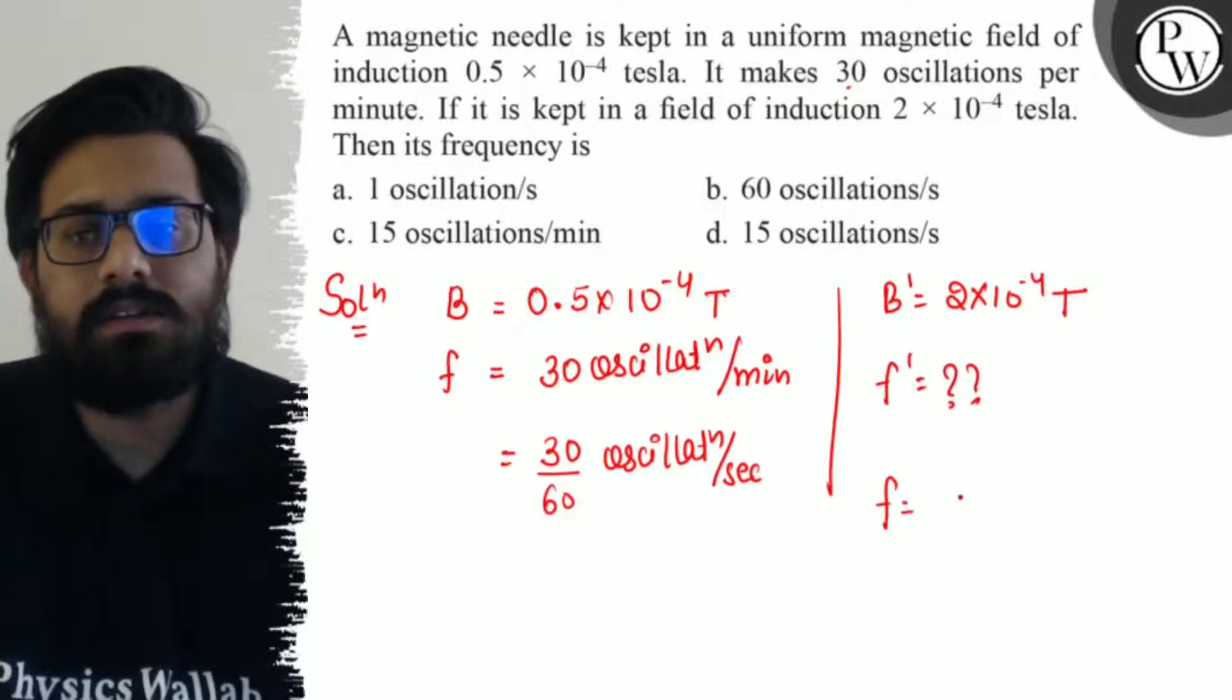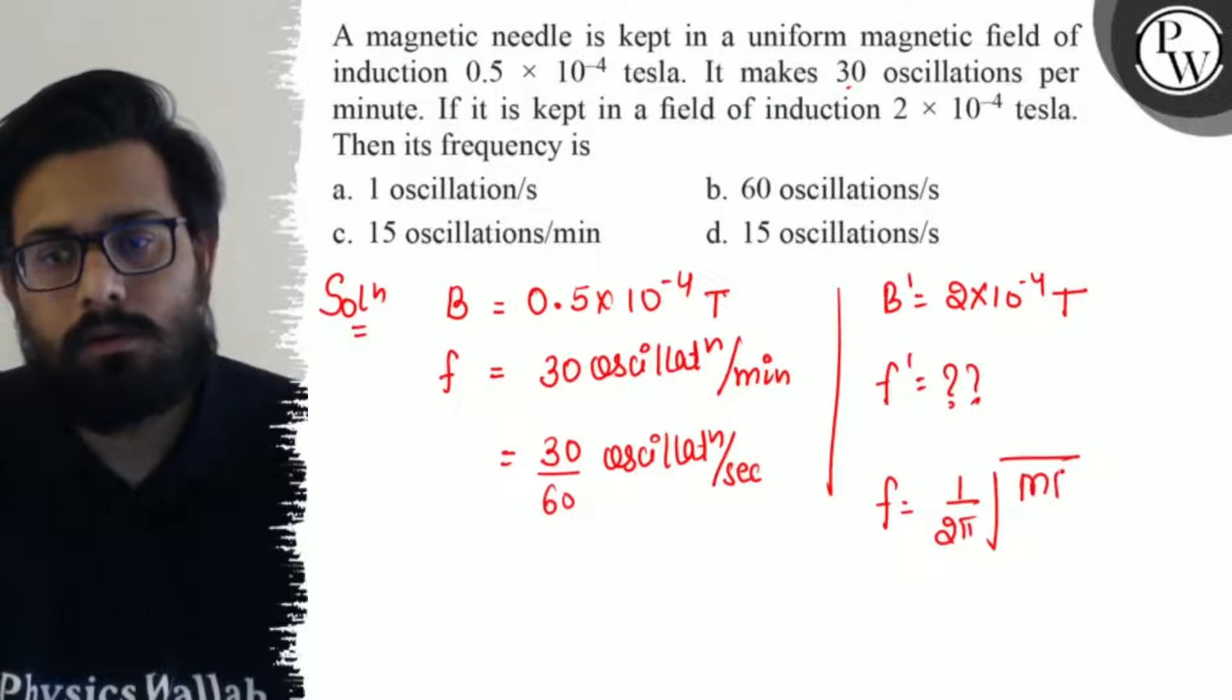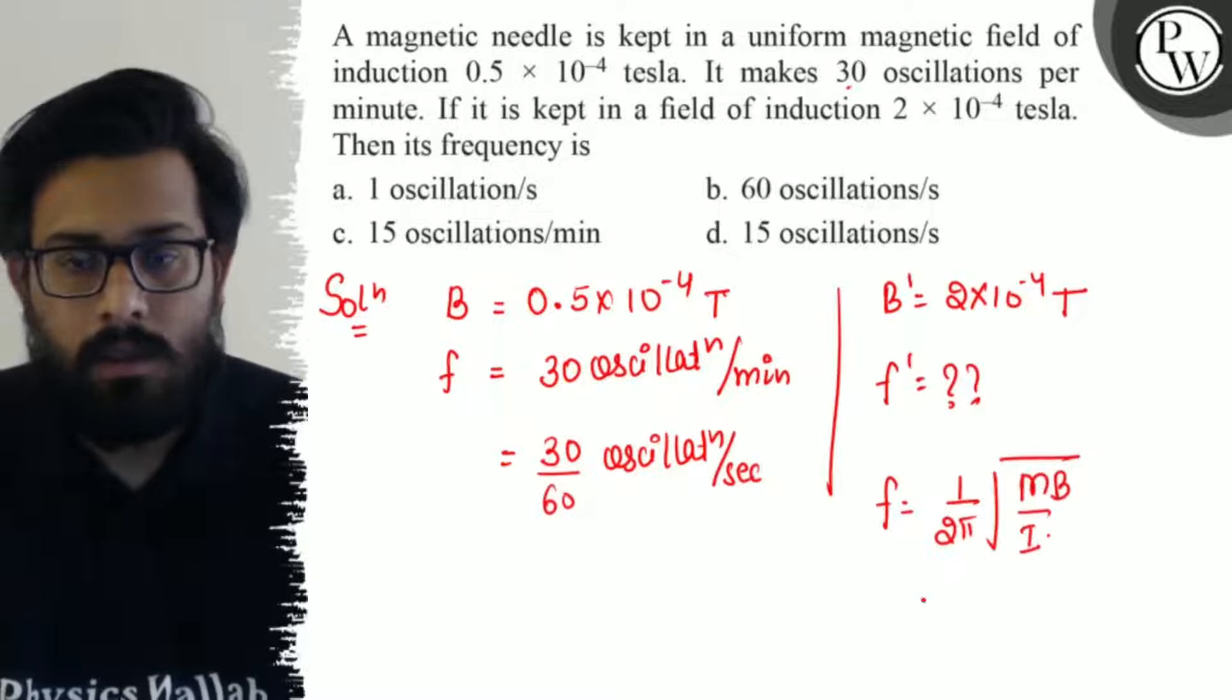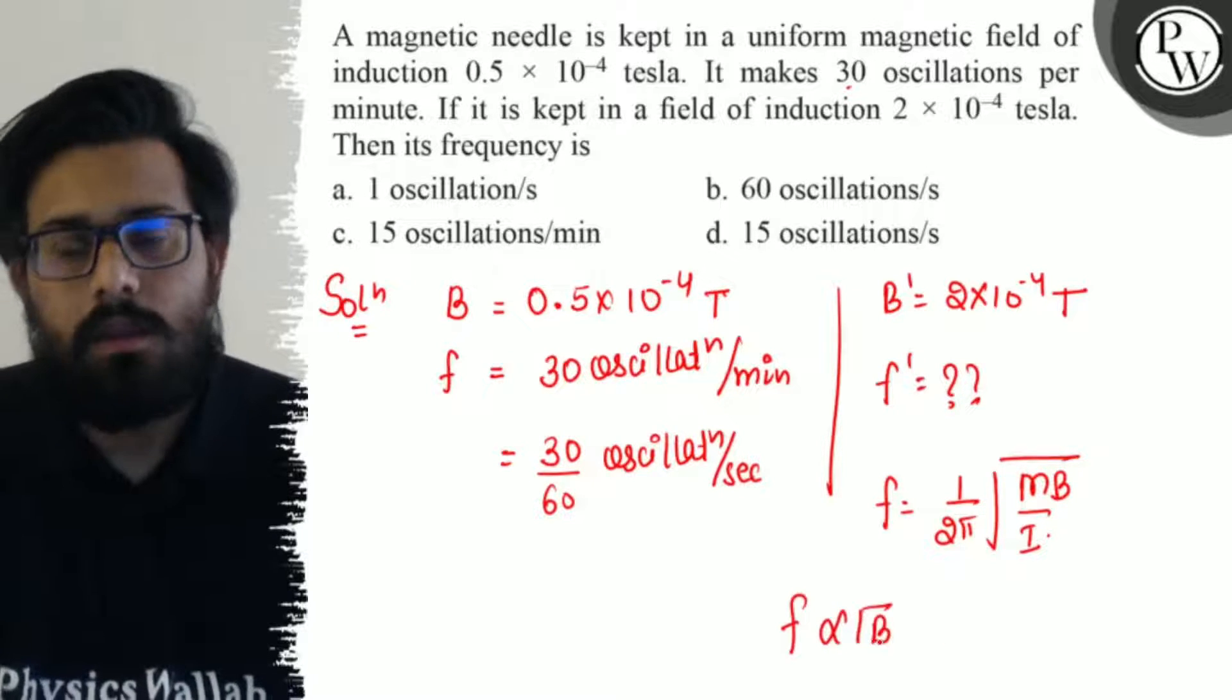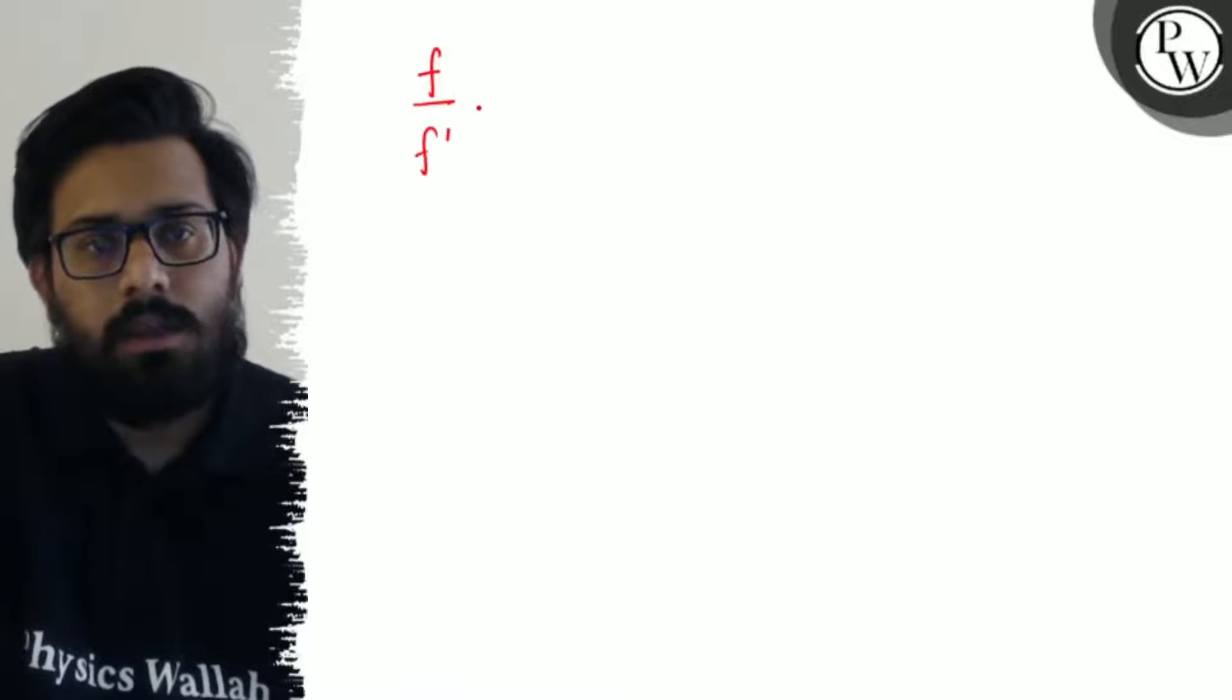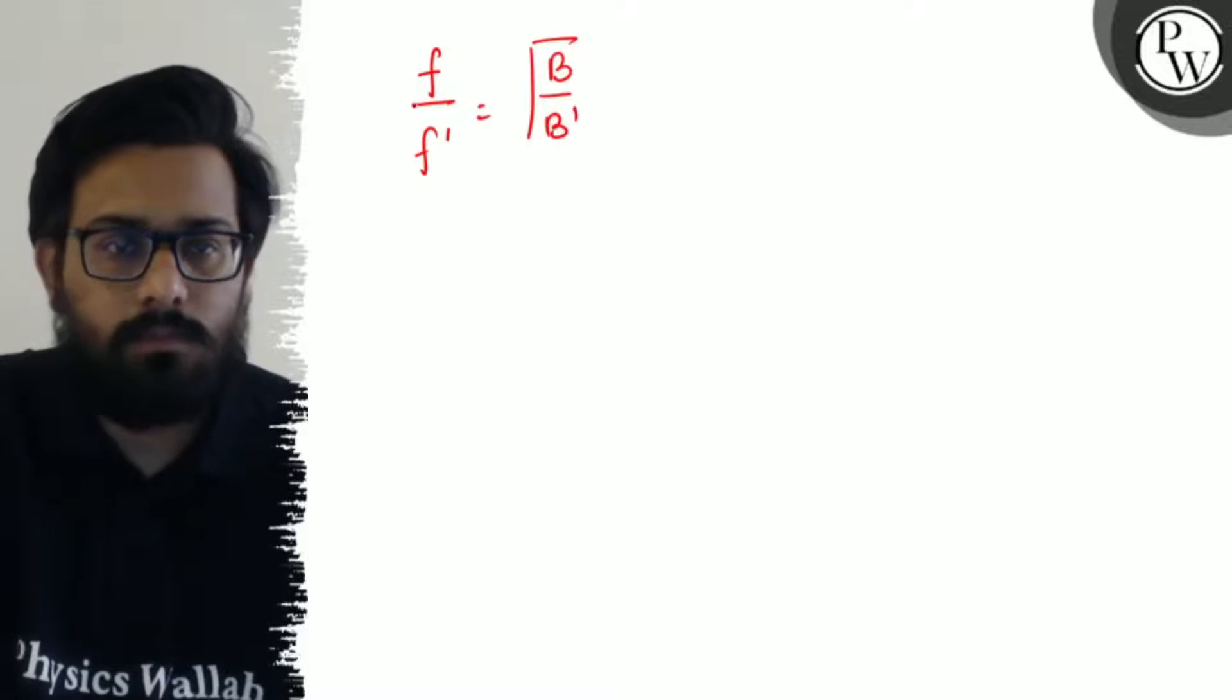We know that the formula for the frequency is f = (1/2π)√(mB/I). From here we can see the frequency is proportional to √B. So if I solve this, it can be written as f/f' = √(B/B').